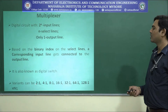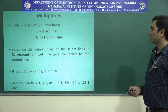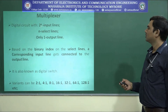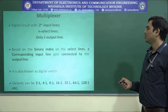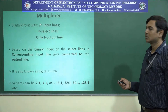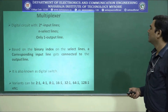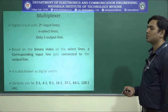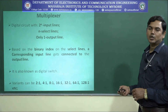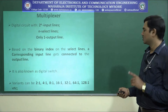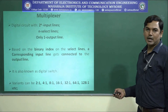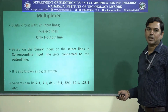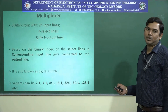A 2-to-1 multiplexer will have 2 input lines, 1 select line, and 1 output line. If we go to a 4-to-1 multiplexer, 4 can be written as 2 to the power 2, so n is 2. A 4-to-1 multiplexer will have 4 input lines, 2 select lines, and only 1 output line. For a 32-to-1 multiplexer, 32 can be written as 2 to the power 5, so it will have 32 input lines, 5 select lines, and only 1 output line. In general, a multiplexer has 2 to the power n input lines, n select lines, and only 1 output line.